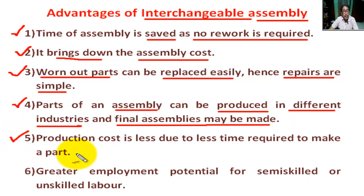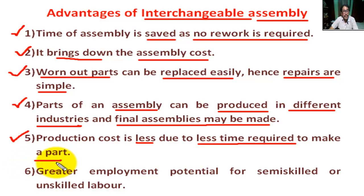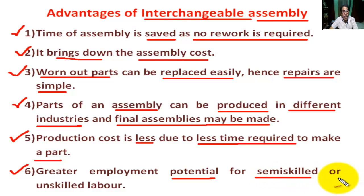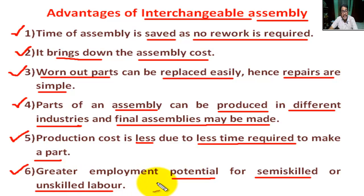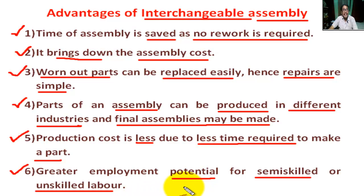Number five: production cost is less due to less time required to make a part. Number six: greater employment potential for semi-skilled or unskilled labor. Highly experienced and skilled labor need not be appointed, as the parts manufactured need not be of higher dimensional accuracy.